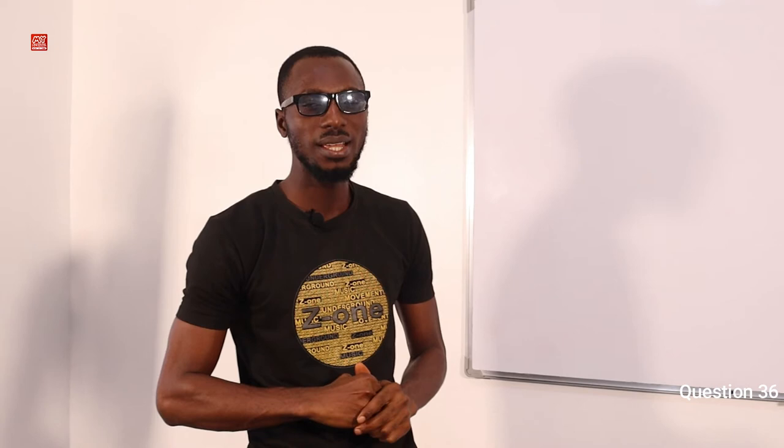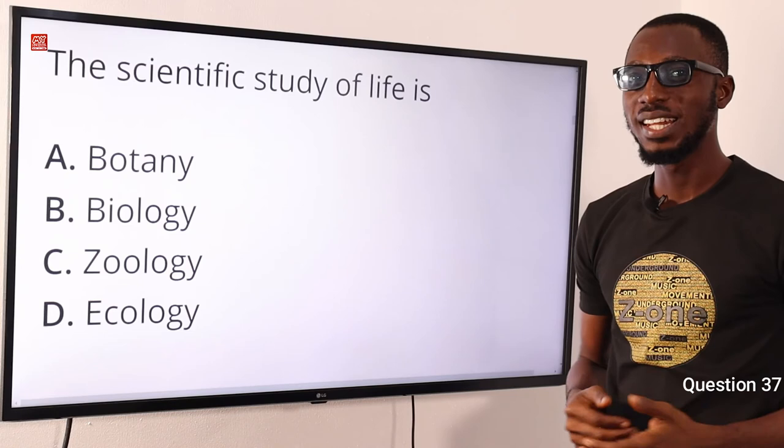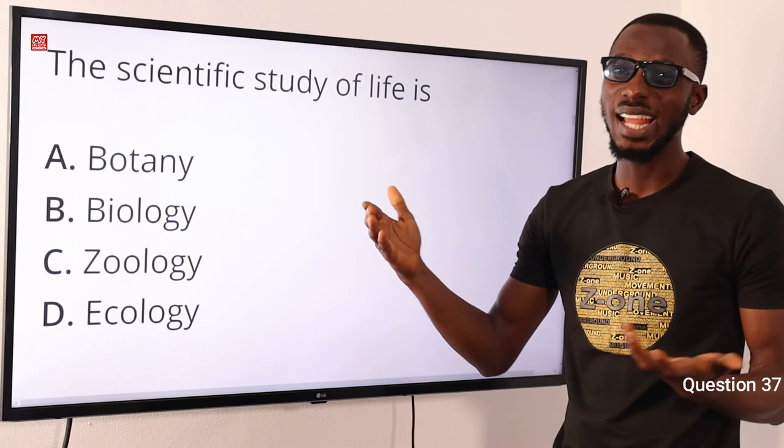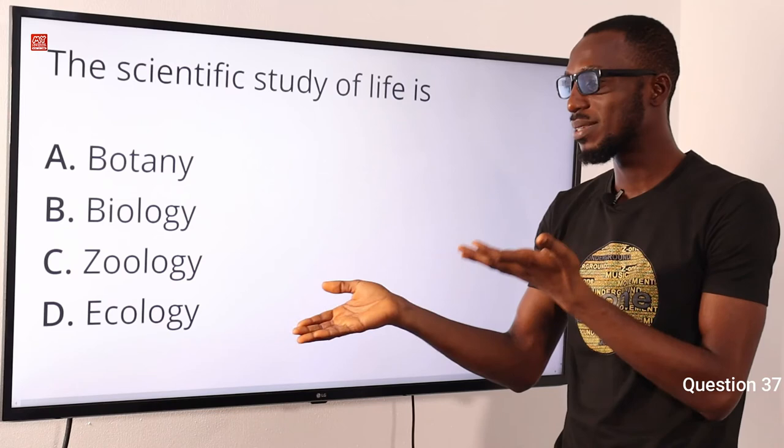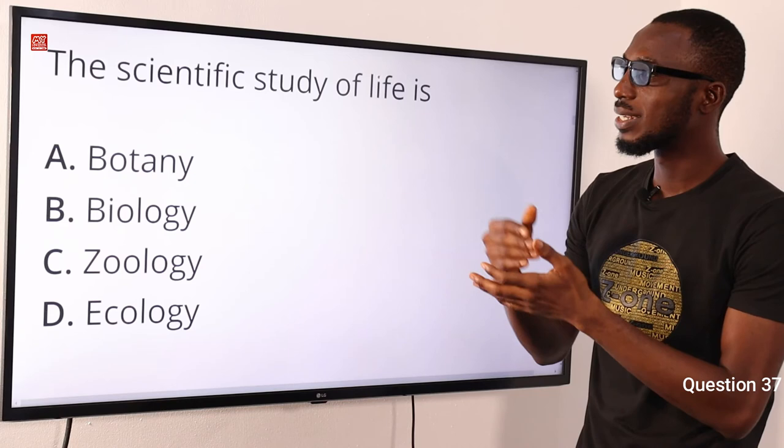It is very possible that you have better explanations or contributions to make — use the comment section below, indicate the question number and the explanations you'd like to share. Question 37: The scientific study of life is what? That is biology — 'bio' means life, 'logos' means study. Botany is the study of plants; zoology is the study of animals; ecology is studying organisms in relation to their environment. The correct option is option B for biology.